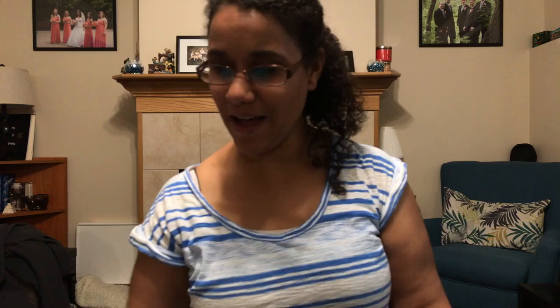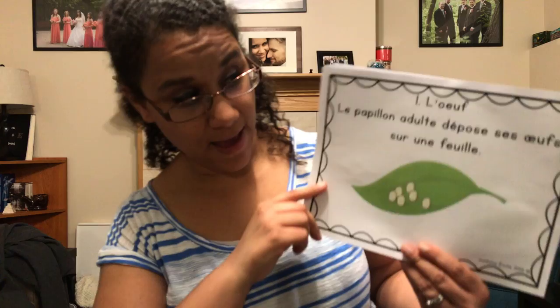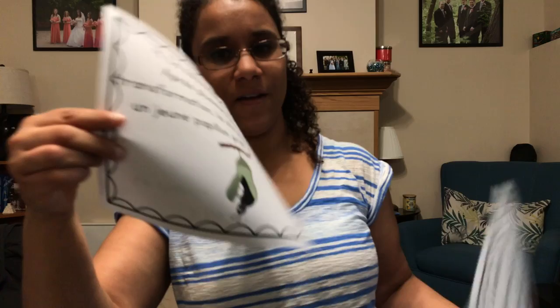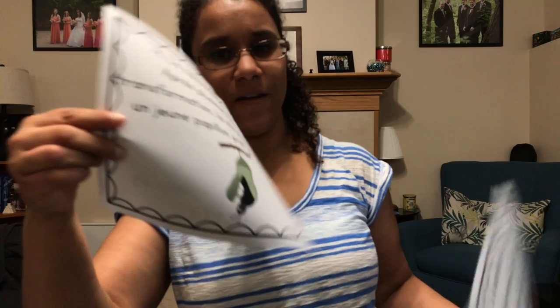That's the life cycle of a butterfly. Donc, la cycle de vie d'une papillon, c'est les œufs, les chenilles, les chrysalides, une jeune papillon, regardez les jeunes papillons, et une papillon adulte.